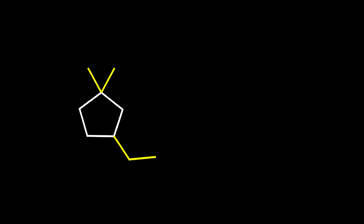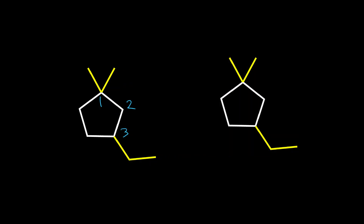Here is the next example, which is completely different from the previous one. I can put number one here and go 1, 2, 3 — or I can put number one on the point of attachment of the ethyl group. For the left option we have three branches, and on carbon one we have two branches, giving us 1,1,3 when we write the name. For the second option we have 1,3,3. Considering these numbers, 1,1,3 is lower than 1,3,3.